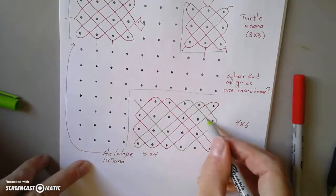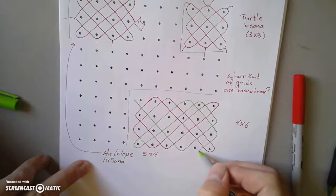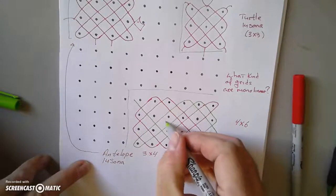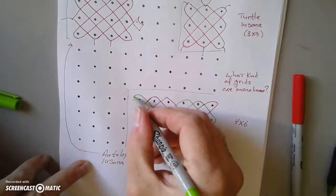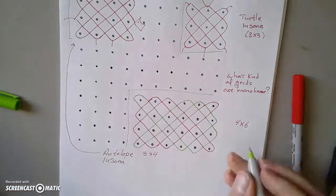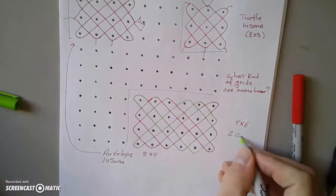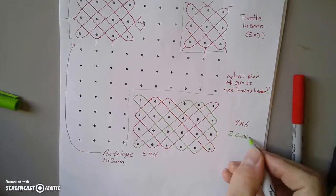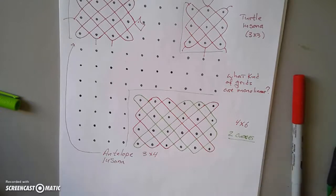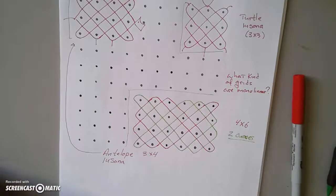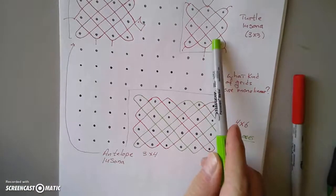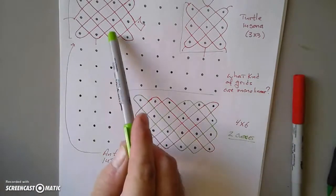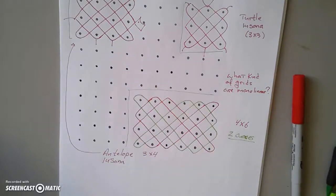And it can be fun to explore the pattern. So two curves. So why are there two on that one? Why are there three on this one? Why is there only one on the antelope?